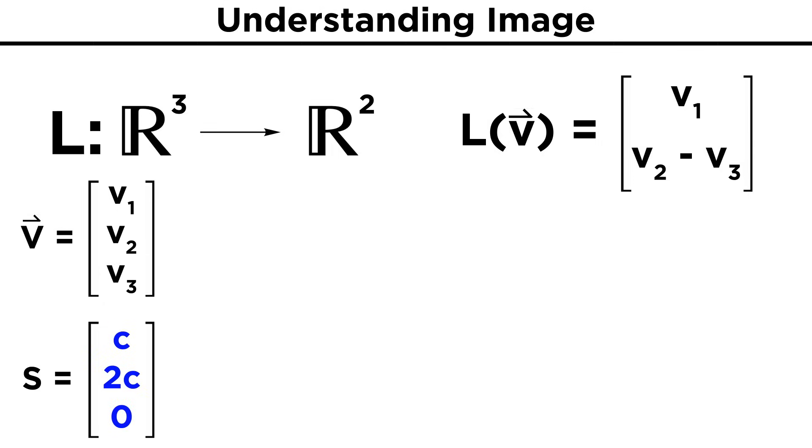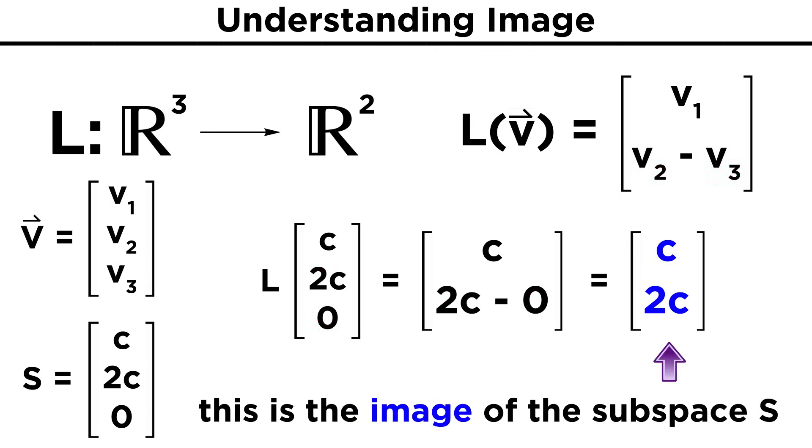Written out, this is the set of vectors of the form C, 2C, zero, where C is any scalar. Let's plug this form into our linear transformation and see what we get. Our transformation says to plug the first element into the top row, so C, then plug the difference of the second and third element into the bottom row, so 2C minus zero. We end up getting an image of the form C, 2C.